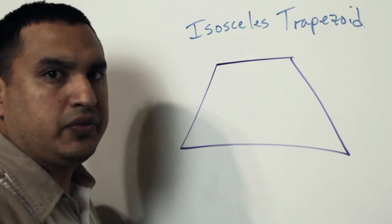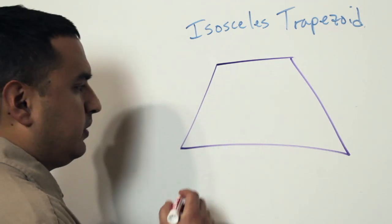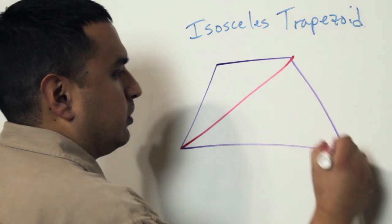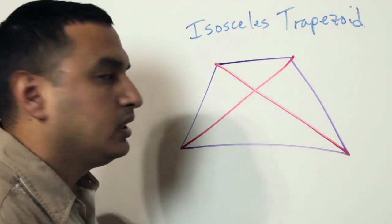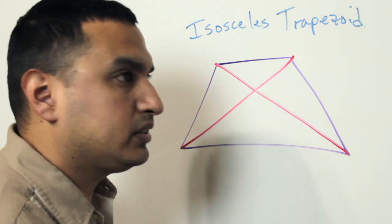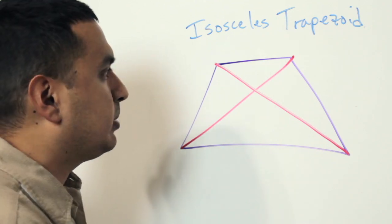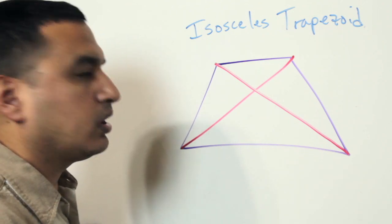Another way that you can tell if you have an isosceles trapezoid is if you know that these diagonals are congruent. Okay, so it works both ways. If I give you two diagonals and I tell you they're congruent, you know you have an isosceles trapezoid. Or if I tell you you have an isosceles trapezoid, that means the diagonals are congruent.